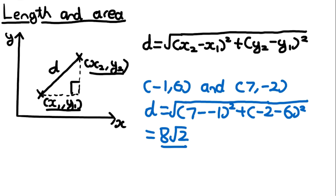And this is the distance between the two points. You could also swap the coordinates around — so you could do (minus 1 minus 7) squared plus (6 minus minus 2) squared — and you'll get the same value out.